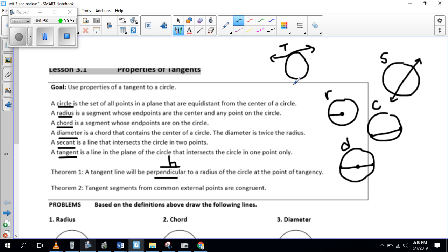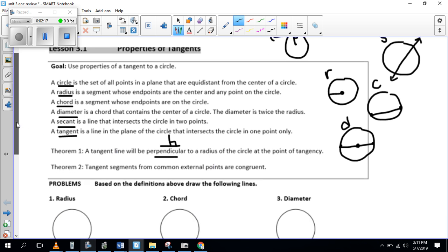It's perpendicular to the radius. So if I have my tangent line here, and I had a radius, it will make a 90 degree here. Tangent segments from common external points. Common means they have something in common, something like they're outside or congruent. But we'll go over that later.